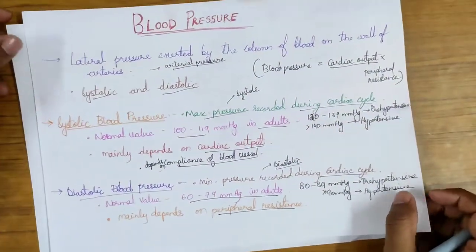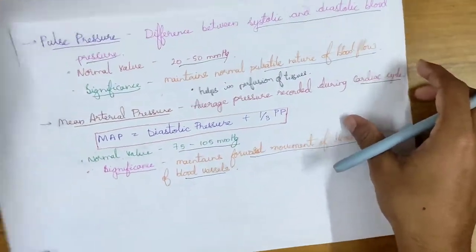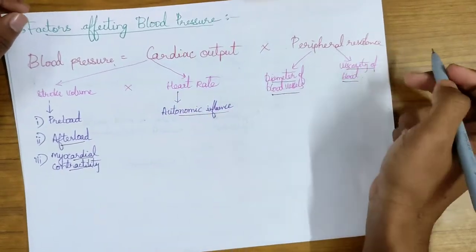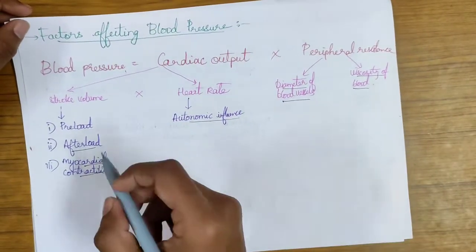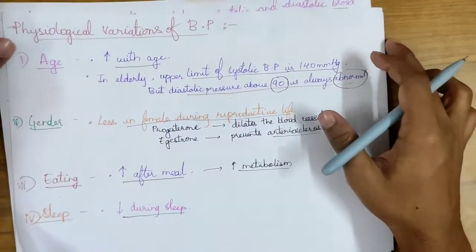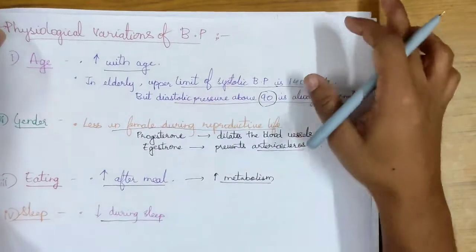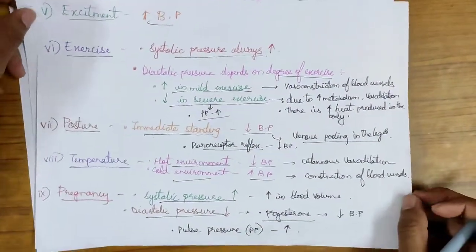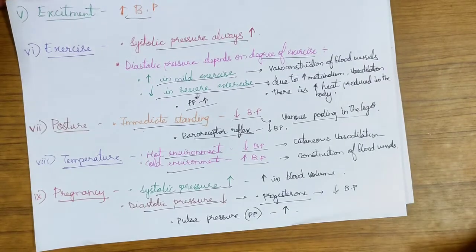To quickly revise: in this video we talked about blood pressure and important terms — systolic blood pressure, diastolic blood pressure, pulse pressure, and mean arterial pressure. We talked about factors affecting blood pressure using the formula Blood Pressure equals Cardiac Output multiplied by Peripheral Resistance. We also discussed physiological variations of blood pressure: age, gender, eating, sleep, excitement, exercise, posture, temperature, and pregnancy. If you found this video informative please like, share, comment, and subscribe. Notes will be provided in the description below.